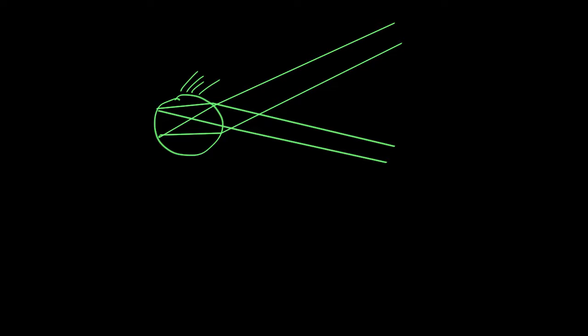And so the angle here of the distance between these two objects is theta. So the further an object is away, the smaller that angle is going to be, and the smaller it's going to appear here on the back of my eyeball.